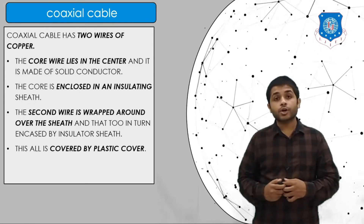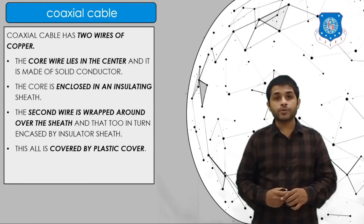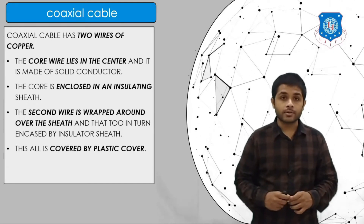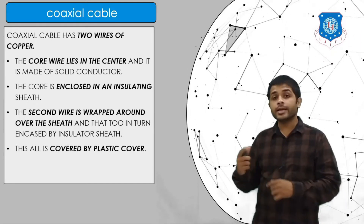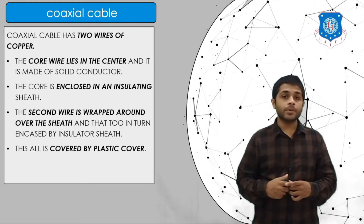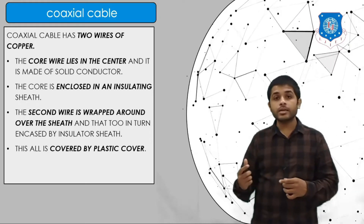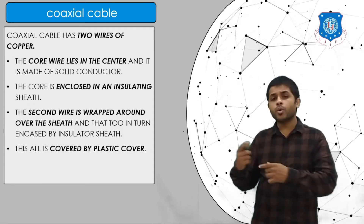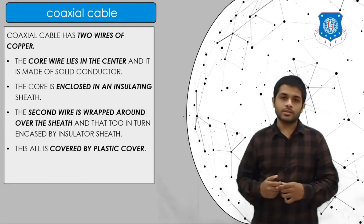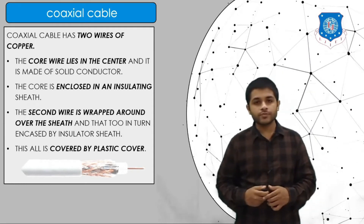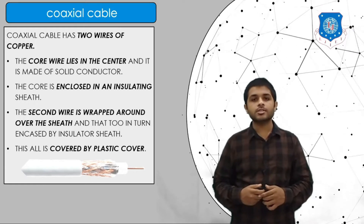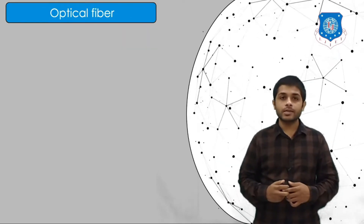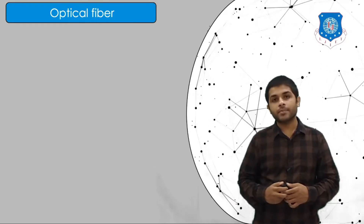The second type of guided media is the coaxial cable. It has a core wire in the center enclosed in an insulating material. A second wire is wrapped around the insulating material, and the whole cable is covered by plastic. This is the coaxial cable. The third type is the optical fiber cable.